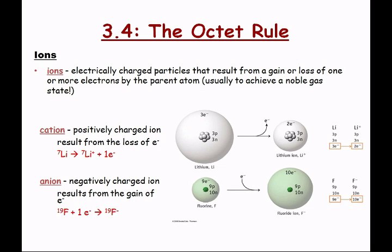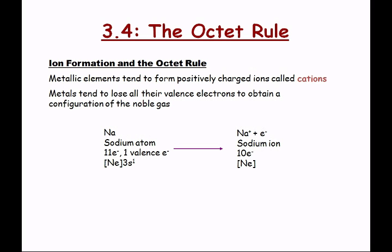We can also look at ion formation through electron configurations. The condensed electron configuration for sodium shows the neon noble gas configuration plus one electron in the 3s subshell. It's easy enough to lose that one electron and gain the neon configuration. Sodium has only one valence electron, and when it loses it, it becomes a cation — positively charged. The charge of the sodium ion is positive 1, because it's only losing one electron.